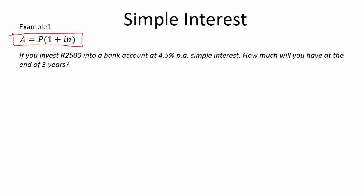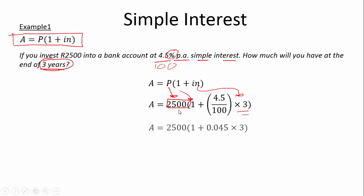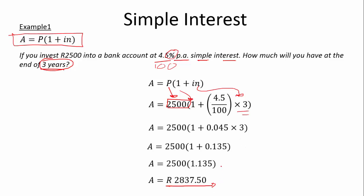If you invest 2,500 Rand into a bank account at 4.5% per annum simple interest, how much will you have at the end of three years? A equals P(1 + i·N). P is 2,500, i is 4.5 divided by 100 = 0.045, and N is 3 years. So A equals 2,500 × (1 + 0.045 × 3) = 2,500 × (1 + 0.135) = 2,500 × 1.135 = 2,837 Rand 50. This is our accumulated total, our closing balance.